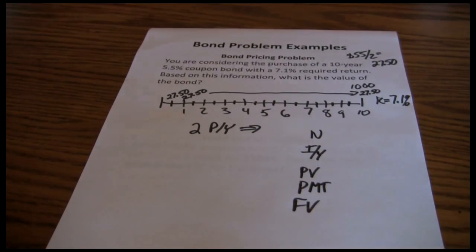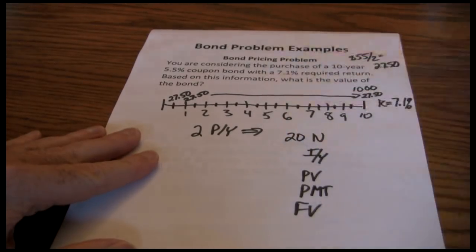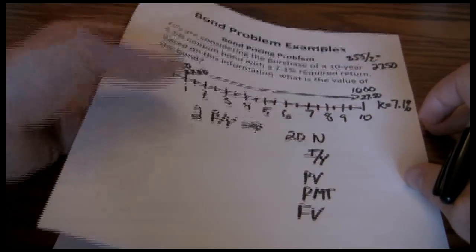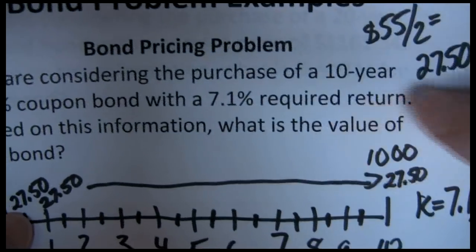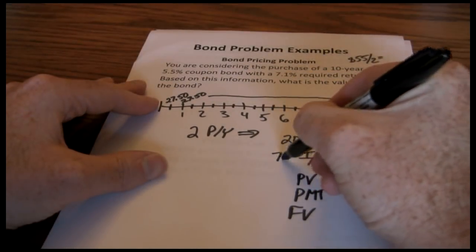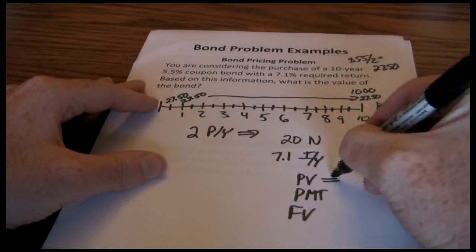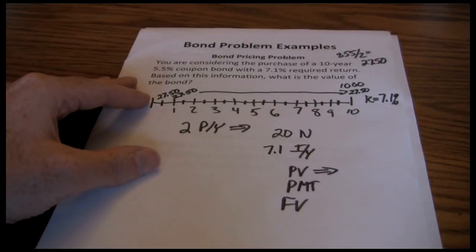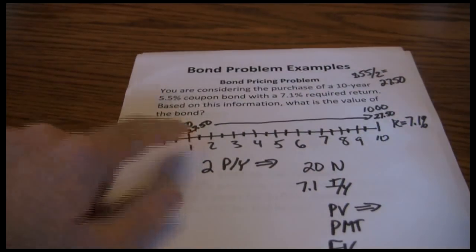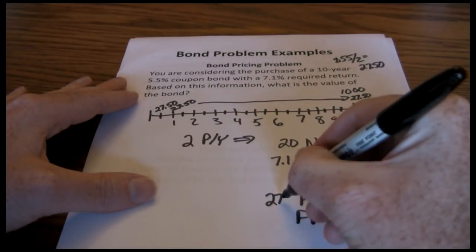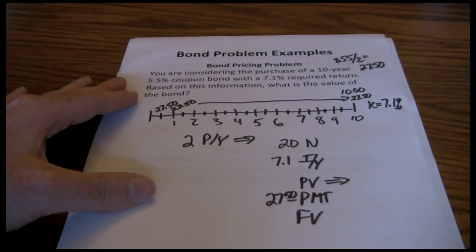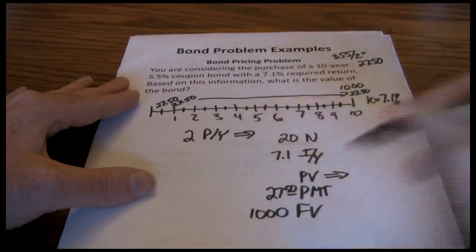Now I'm going to walk through this problem on my HP-10B, but regardless of which calculator you're using, you should be comfortable with your five-key approach at this point. You need to start by setting your periods per year to two, and then use the five-key approach on your calculator. Because we have two periods per year, 10 years is actually 20 semi-annual time periods. The interest rate is that required return or discount rate that we talked about earlier. So that's 7.1% for our interest rate. The present value is what we're solving for. We want to know what the bond is worth today. The payment is the annuity, that $27.50 each six months. And the future value is the $1,000 par value.